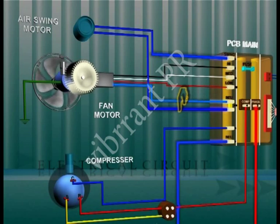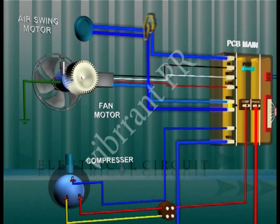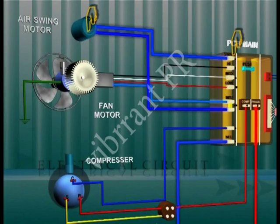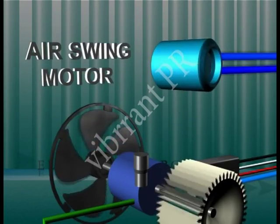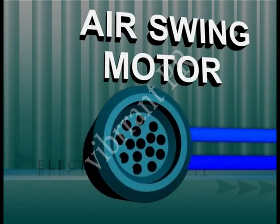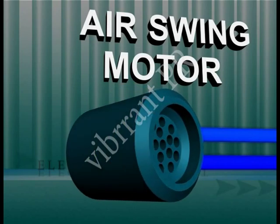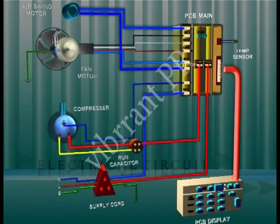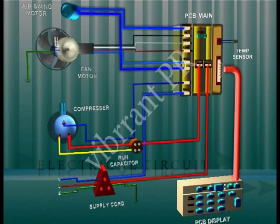Simultaneously, supply from terminal P5 (live) and terminal P1 (neutral) goes to the air swing motor. The LED air sweep on the PCB display begins to glow and the air swing motor begins to rotate. The AC is now fully working.